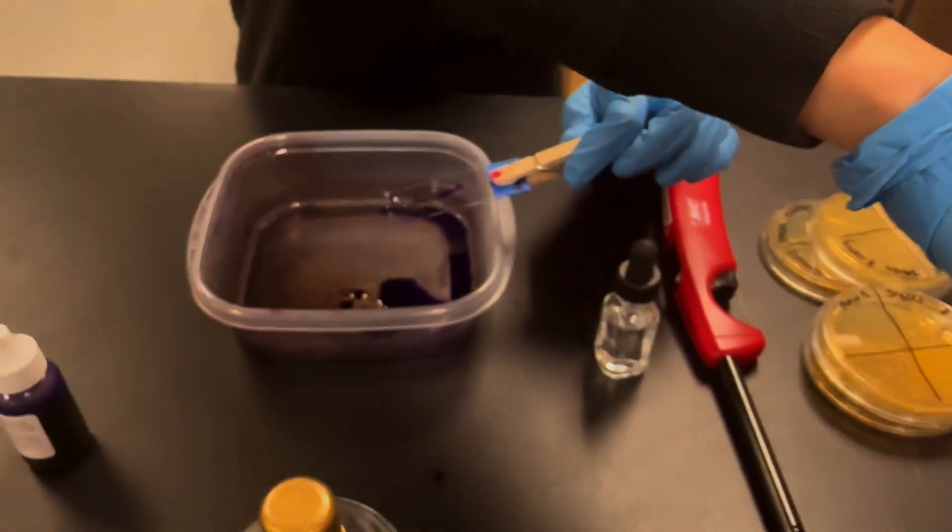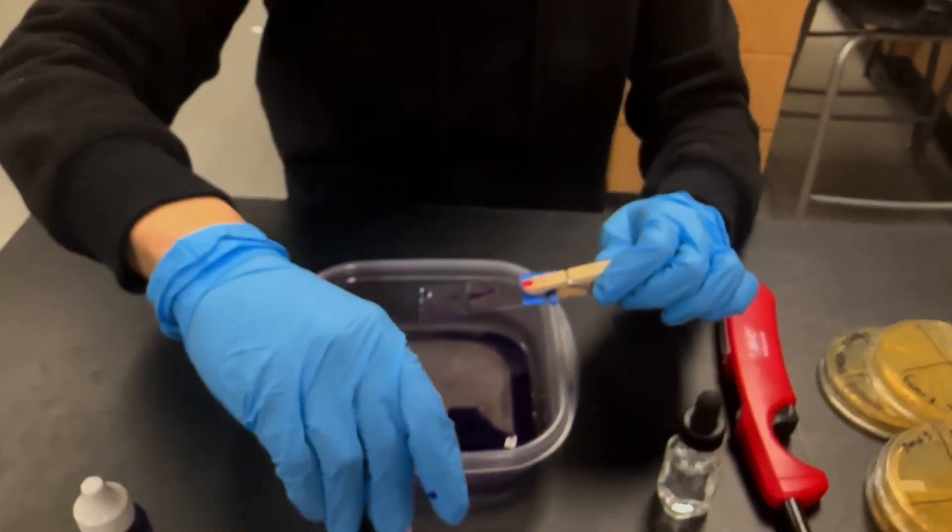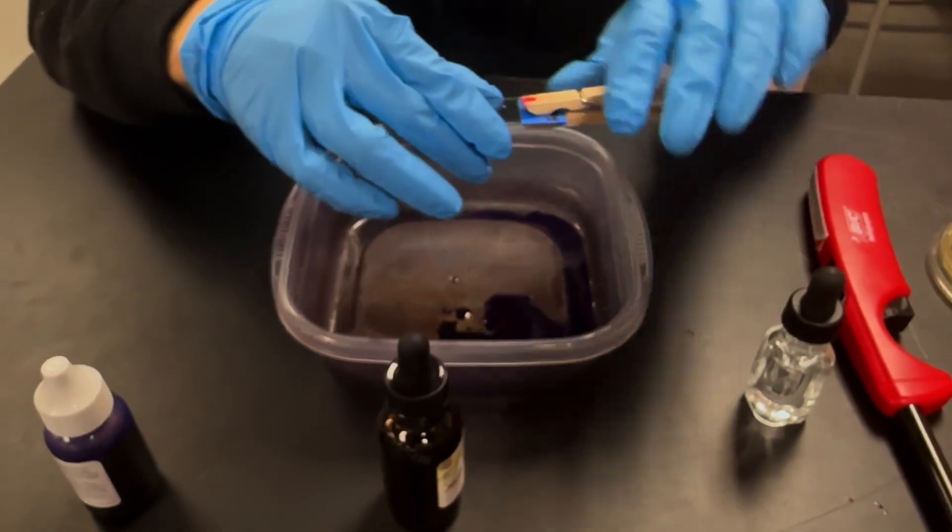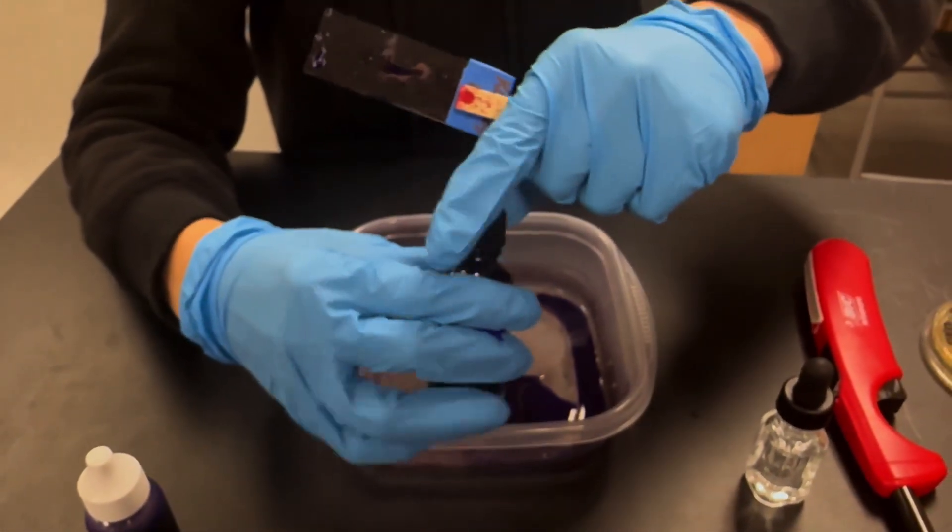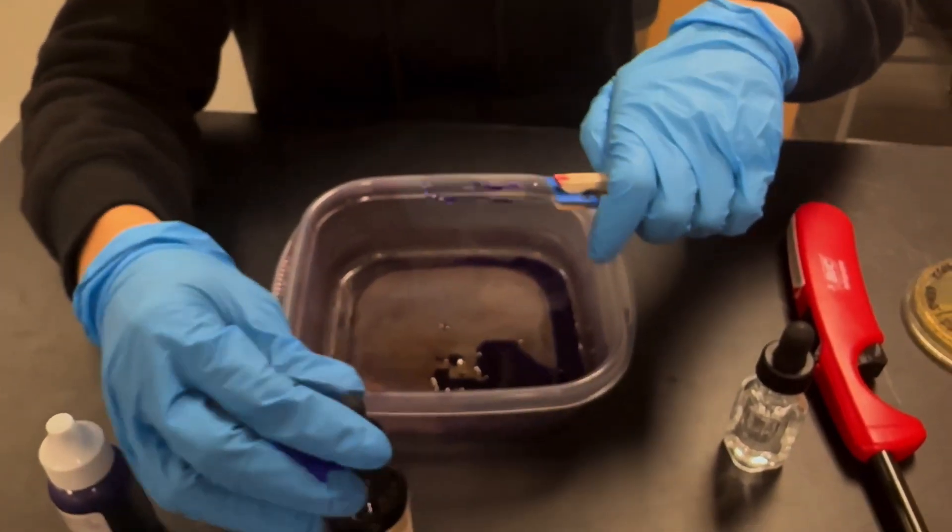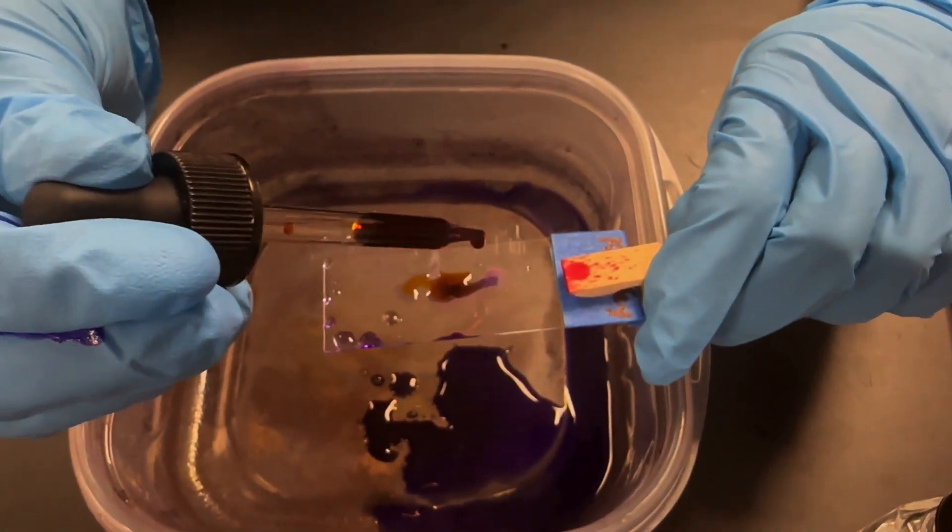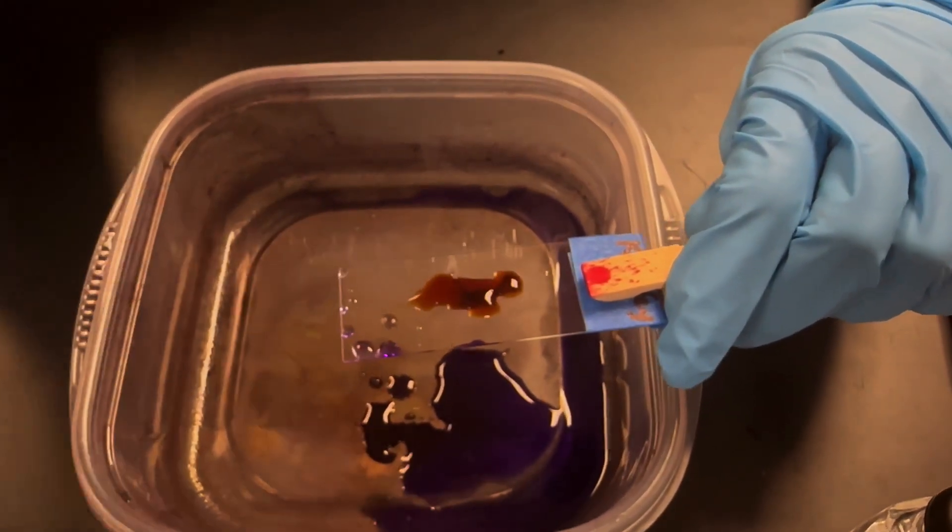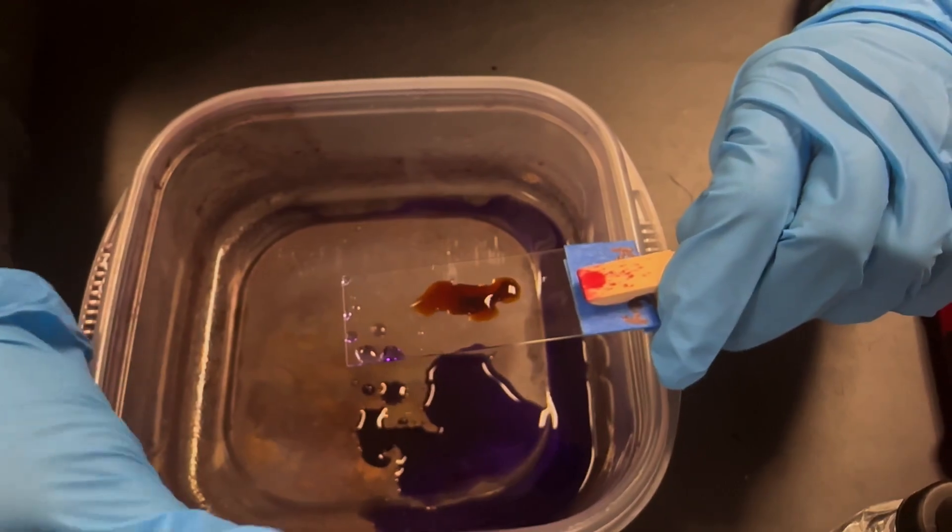So in the next step, we're going to use Gram's iodine and we'll do the same thing that we did before. So I'm going to take the Gram's iodine and I'm going to put no more than four drops, one, two, three, four, here and we'll start the timer for one minute.